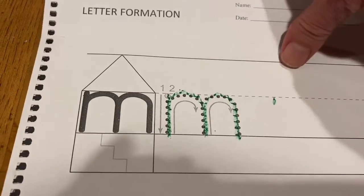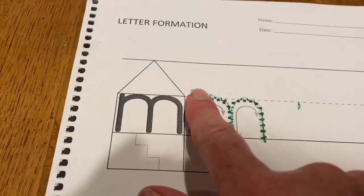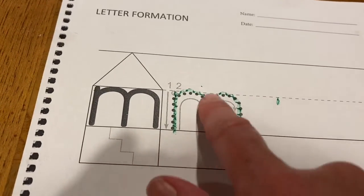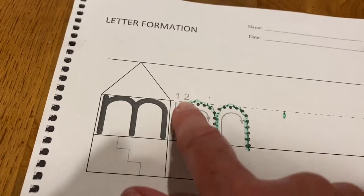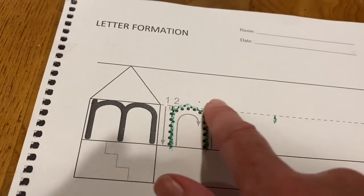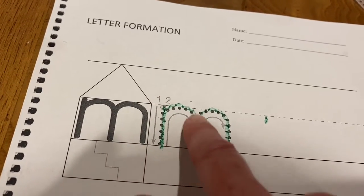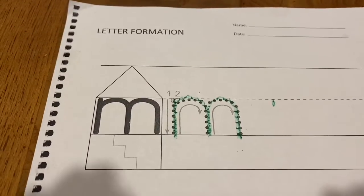Now you can take out your bumpy screen and you can trace down, up and around, up and around again. Line down, up and around, up and around again. Line down, up and around, up and around. That is how we make our lowercase m.